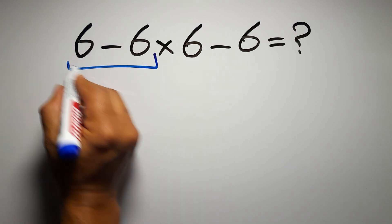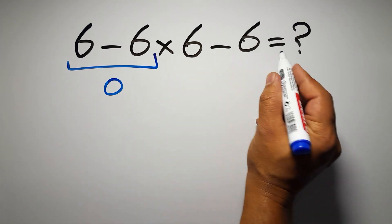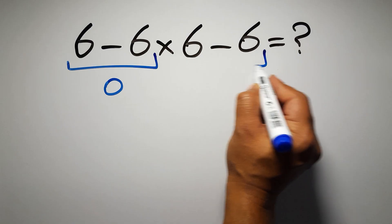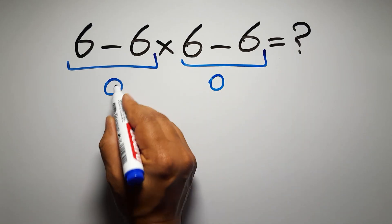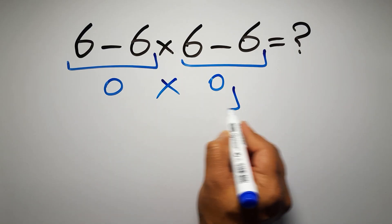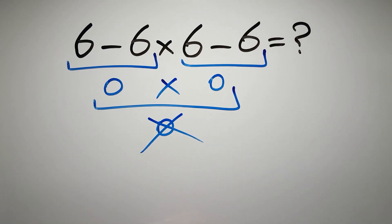6 minus 6 gives us 0, and again here we have 6 minus 6, so 0 times 0 is just 0. But this answer is not correct.